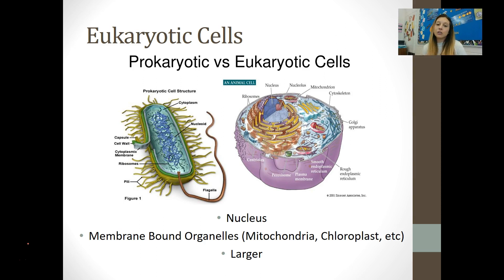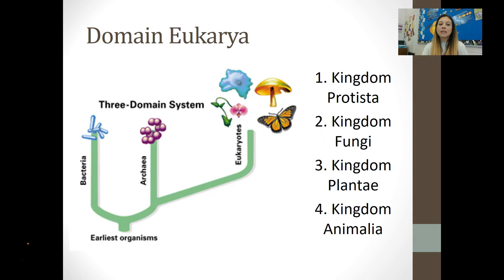Eukaryotic cells also have those fancy membrane-bound organelles — structures we learned about earlier in the year, like the mitochondria and the chloroplast, the Golgi body, and the endoplasmic reticulum. Eukaryotic cells are larger and more complex. There are four kingdoms that belong to the domain Eukarya: kingdom Protista, kingdom Fungi, kingdom Plantae, and kingdom Animalia.